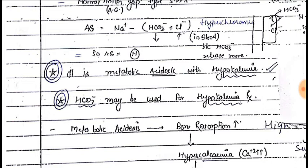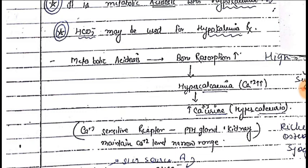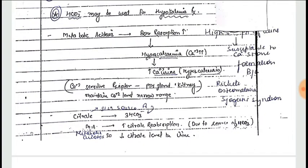Due to metabolic acidosis, blood pH goes down, which leads to bone resorption, causing hypercalcemia. A lot of calcium is presented to the kidney, leading to hypercalciuria. Since the hydrogen ion is not secreted by the collecting tubules into the urine, the urine will be more alkaline in nature, and this alkaline urine is susceptible to stone formation.